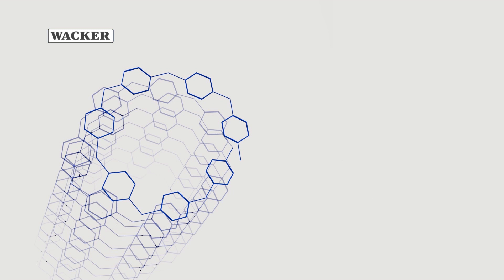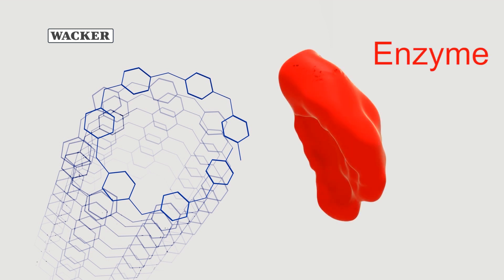These starch spirals can be split by different enzymes. As natural catalysts for metabolic reactions, enzymes are abundant in every living cell.